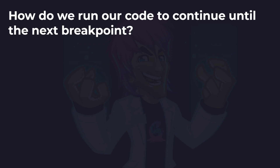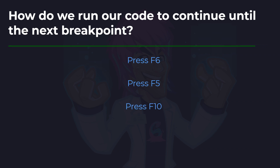Next up, how do we run our code to continue until the next breakpoint is hit? Do we press F6, F5, or F10? This is once a breakpoint has been hit and we want to allow the program to just run as normal again until another breakpoint is hit. And to do that, it's simply F5 again. We can press F5 to start the program, and also press F5 when a breakpoint is hit and we want to continue the application as normal instead of continuing to debug step by step.